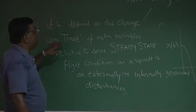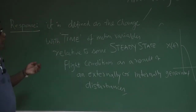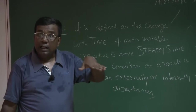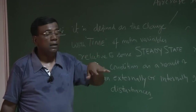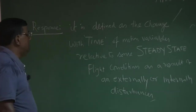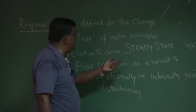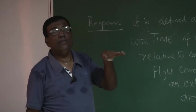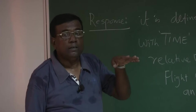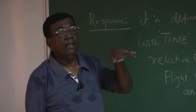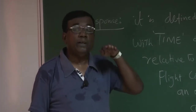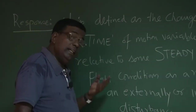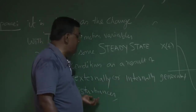We are talking about the time history of motion variables. When the aircraft is moving, motion variables include angle of attack, pitch rate Q, speed, and many others. These are measured relative to some steady-state flight conditions. For example, if the airplane is flying at angle of attack of 2 degrees and a disturbance causes an additional 0.1 degrees, we observe how that 0.1 degrees changes relative to the steady state of 2 degrees.